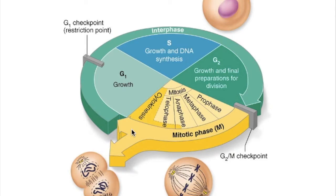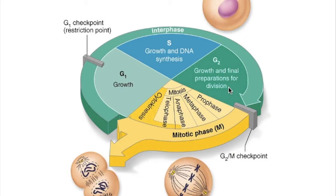Interphase is the period from cell formation to cell division and has three sub-phases: G1, in which the cell is synthesizing proteins and actively growing; S, when DNA is replicated; and G2, in which enzymes and other proteins are synthesized and distributed throughout the cell.